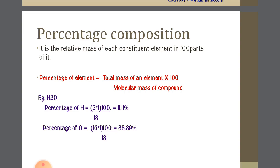So the total mass of that particular element divided by the molecular mass — which is the total mass — tells us how much percent of that component is present. For example, let's find the percentage composition of water. Water contains two elements: H and O.